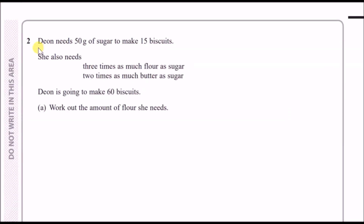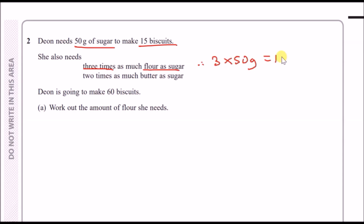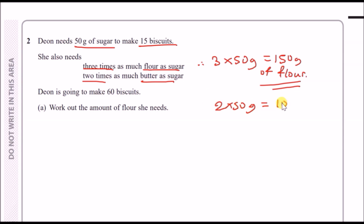Number two: Dean needs 50 grams of sugar to make 15 biscuits. She needs three times as much flour as sugar, so 3 × 50 = 150 grams of flour. She also needs twice as much butter as sugar, so 2 × 50 = 100 grams of butter. Note these two values down as key information.